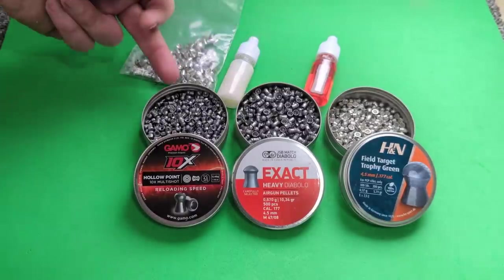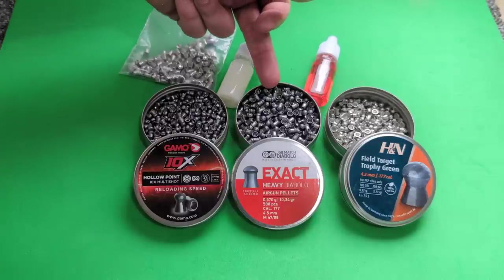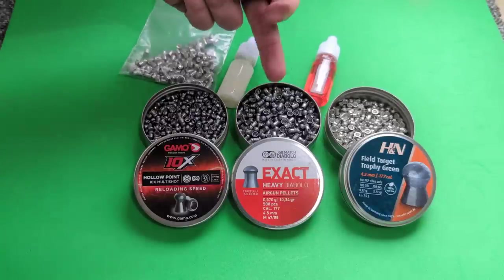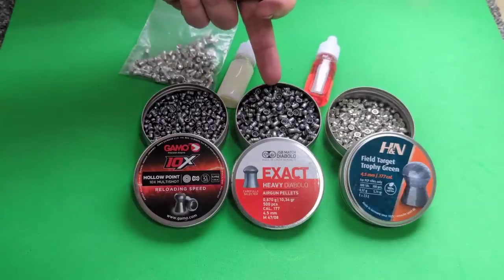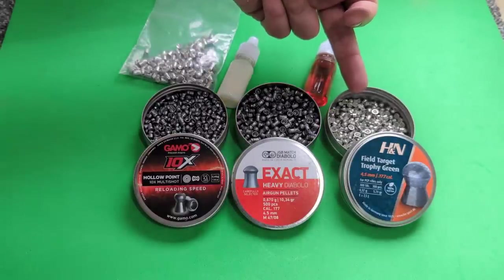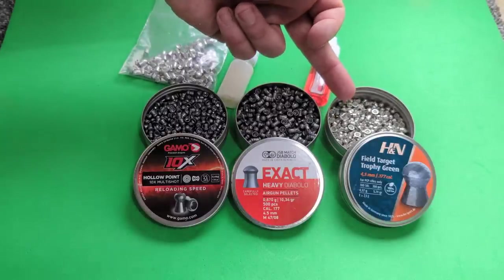Now we've got three types of pellets to try. We've got the basic Gamo 10Xs. These were £6 a tin. Premium pellet, we've got the JSB Exact Heavies. We've used these on the channel. In fact, we've used all three of these on the channel. This is a reasonably good batch. We've seen these already. They run pretty well. And we've also got here the Field Target Trophy Greens. Now these are a lead-free pellet. And so far of the lead-free ones we've used on the channel, these have been pretty good.